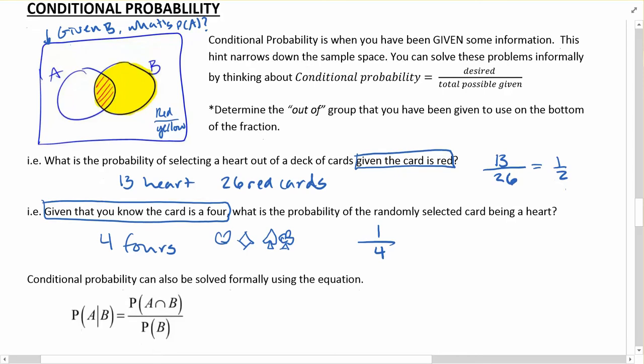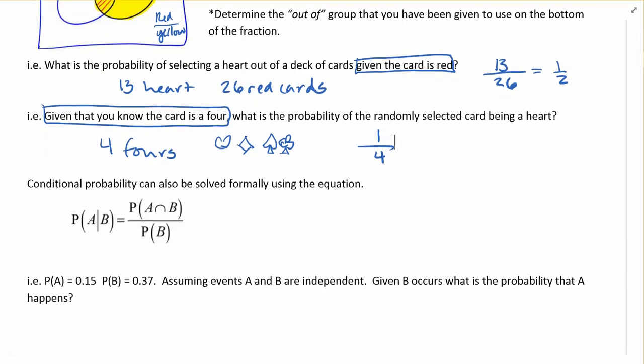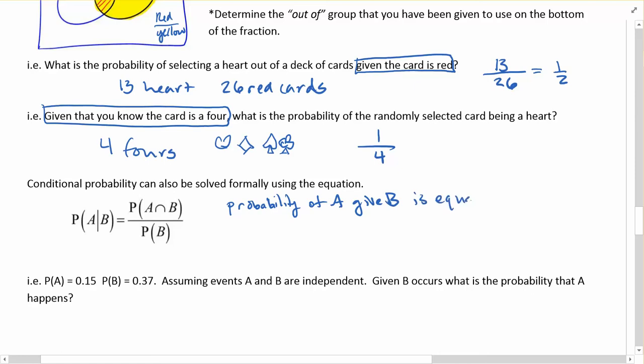Now there's also situations for conditional probability that can be solved formally using this equation. Looks quite confusing, but what this says is the probability of A given B is equal to the probability of A and B over the probability, maybe instead of over I'll just say out of, because I like that as the fraction, out of the probability of B.